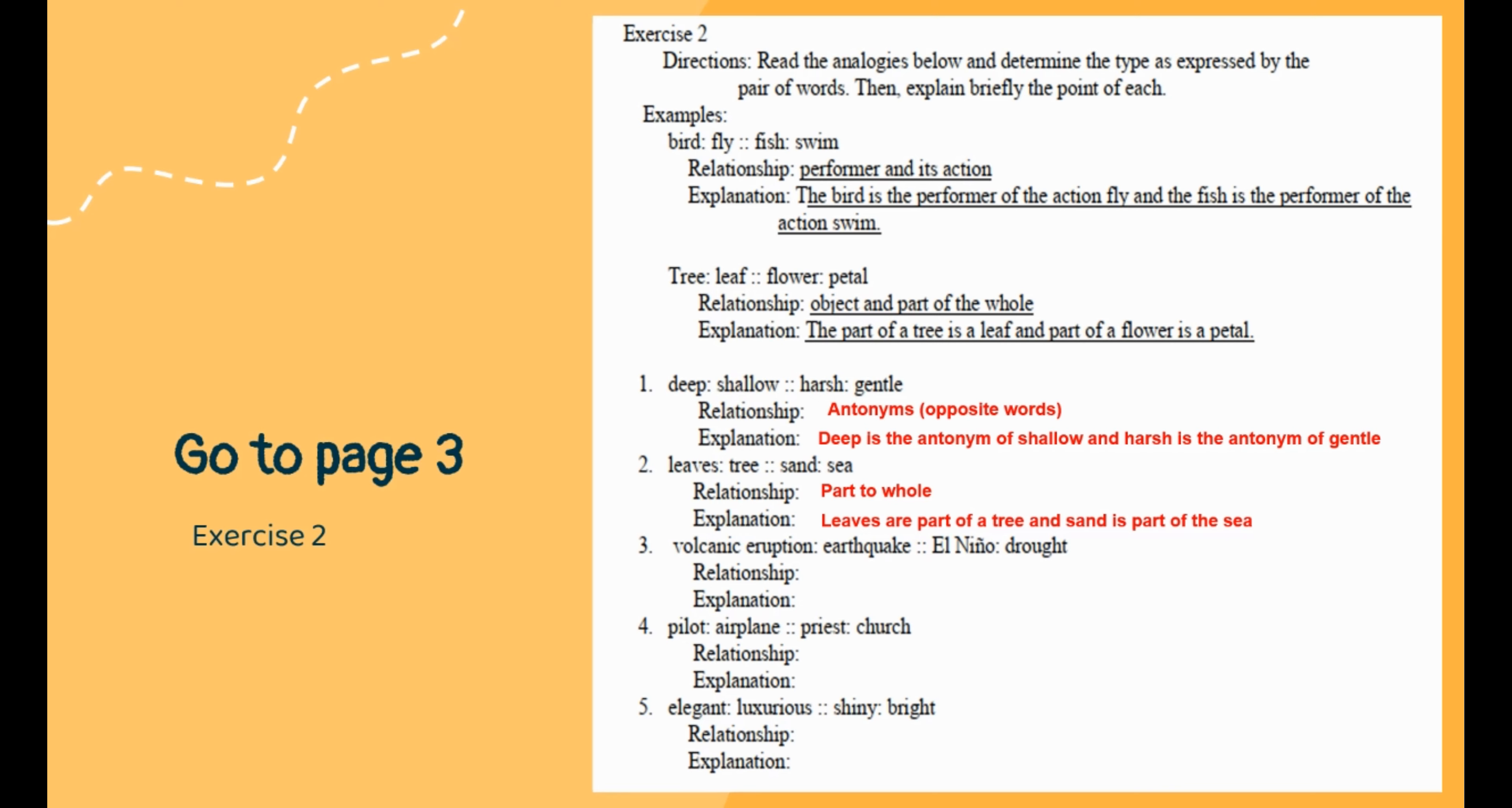Number three: volcanic eruption is to earthquake as El Niño is to drought. The relationship is cause and effect. Volcanic eruptions can cause earthquakes and El Niño can cause drought. Number four: pilot is to airplane as priest is to church. The relationship is performer and result of action. The pilot handles an airplane and the priest handles the church.